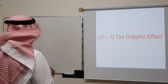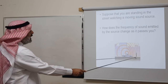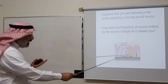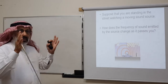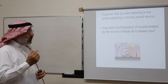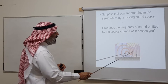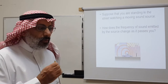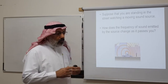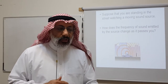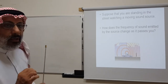Suppose you are standing in the street watching a moving sound source like a police car. The question is: how does the frequency of the siren change as it passes you? As we will see, there will be a shift in frequency that depends on the speed and direction of travel, and this shift is called the Doppler effect. Let me introduce this concept with the following video.